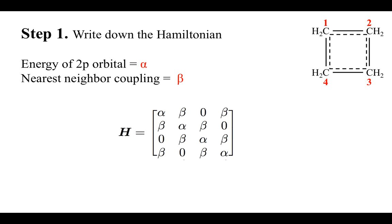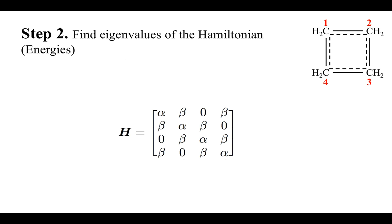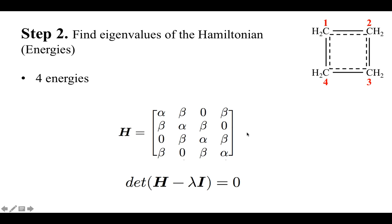Now that we have the Hamiltonian, we can derive the eigenvalues by solving the eigenvalue problem, which is just a matrix algebra problem. It's a four by four matrix, so we need to find four eigenvalues, which correspond to four energies.